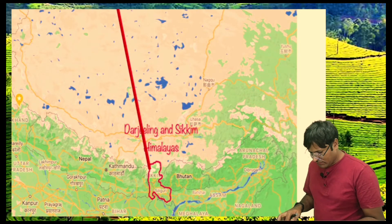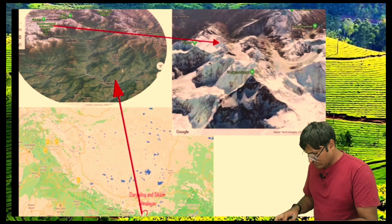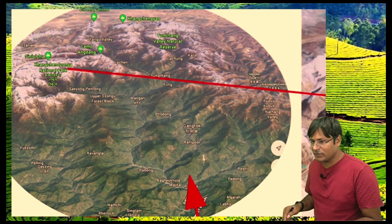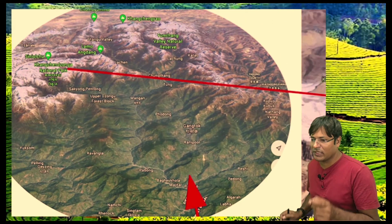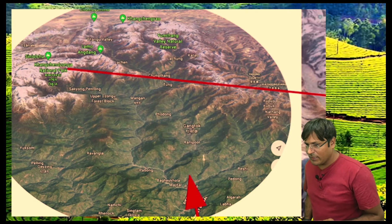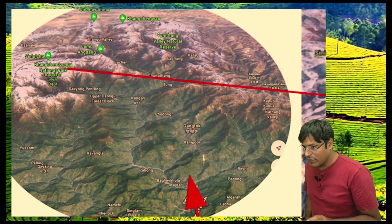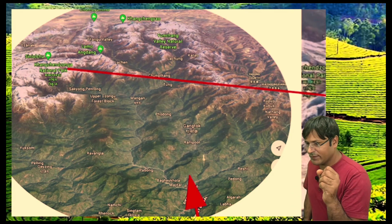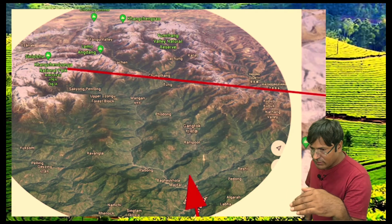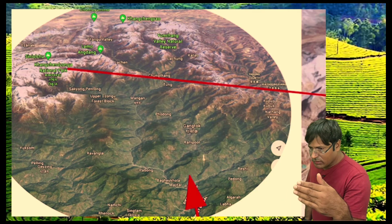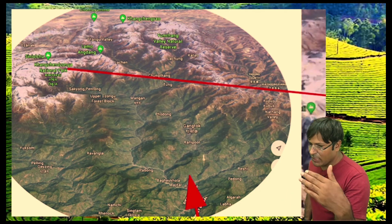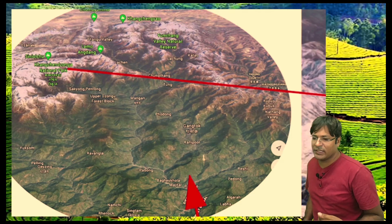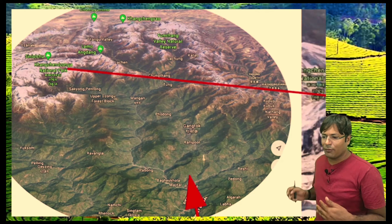Looking at the map marked in red, this area shows the physical features of the Darjeeling and Sikkim Himalayas as seen from space. In the northern upper part there are high mountains, and as you move south there are valleys as well.